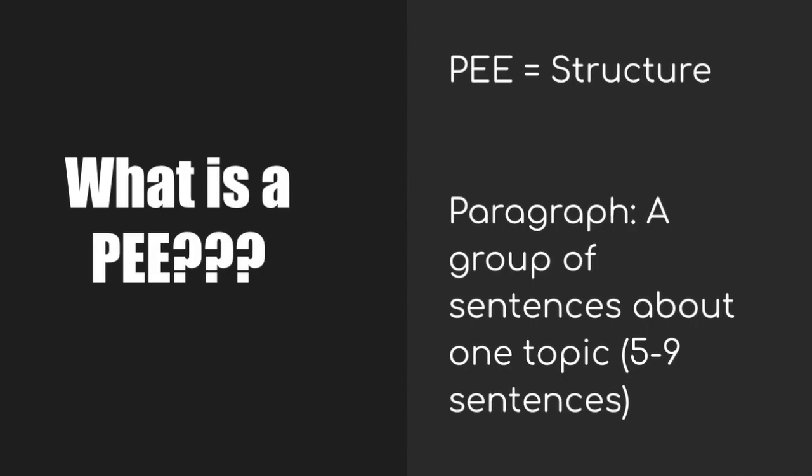So what is a PEE paragraph? Well, PEE is a structure for writing your paragraph. It's the order in which you're going to put the different parts of a paragraph. And what is a paragraph? A paragraph is a group of sentences about a single topic. Typically, a paragraph is about five to nine sentences.